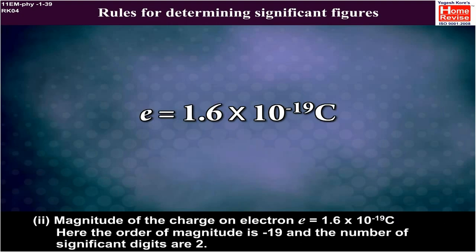Second, magnitude of the charge on electron e = 1.6 × 10⁻¹⁹ coulomb. Here, the order of magnitude is -19 and the number of significant digits are 2.